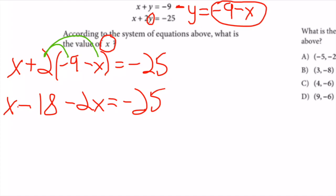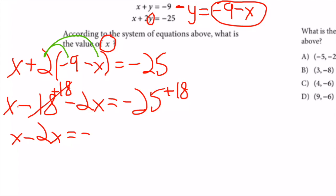I want to simplify: collect like terms, move all x's to one side and numbers to the other. I add 18 to both sides. I'm left with x - 2x = -7.